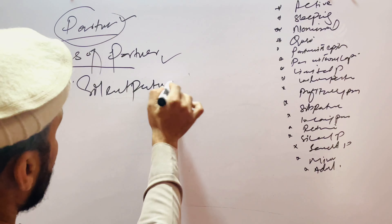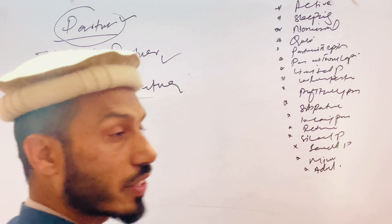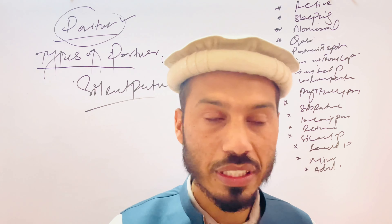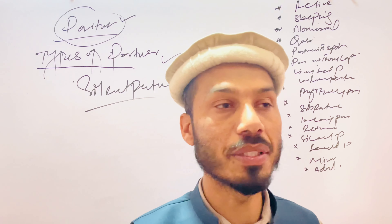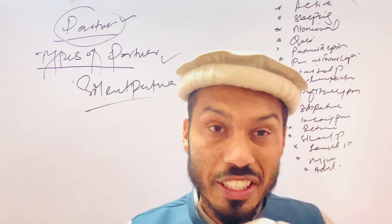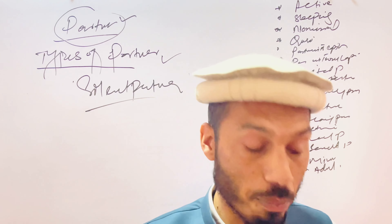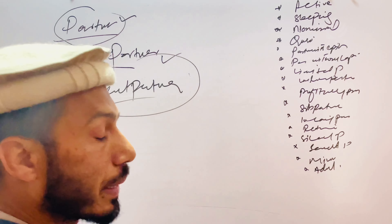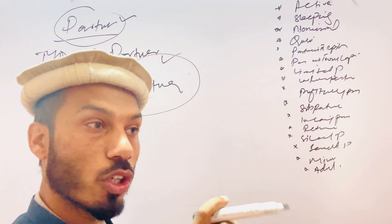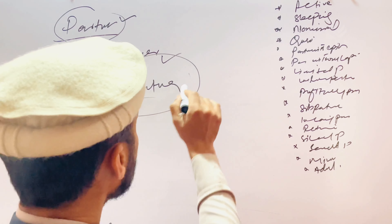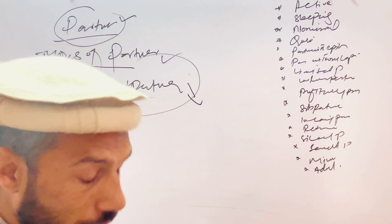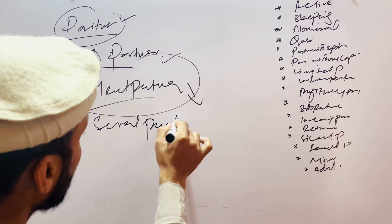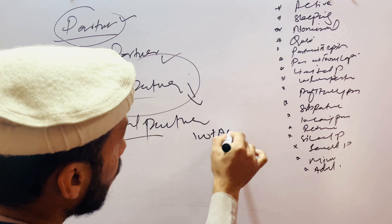The next type is the silent partner. Silent partners are those who do not participate in every type of activity of the organization or firm. They only remain as a partner of the business, sitting in the background, without actively participating. This type of partner is called a silent partner.